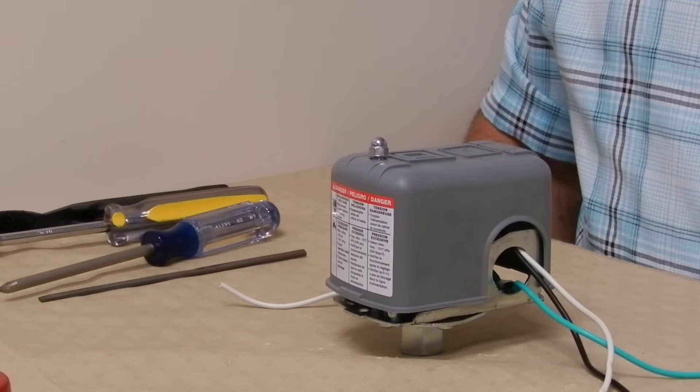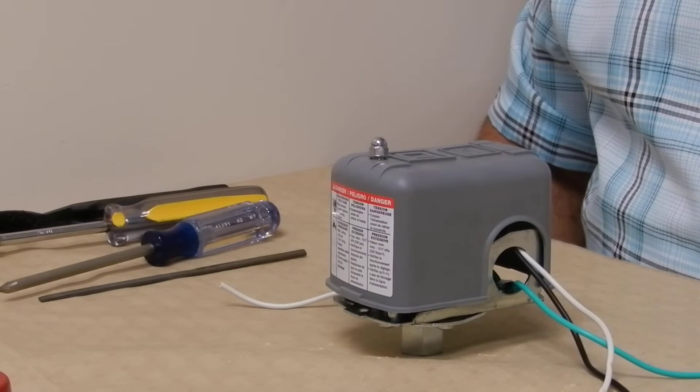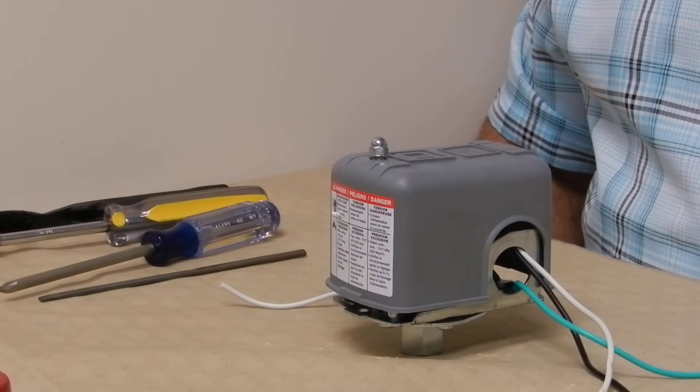You will find that you need to service your pressure switch. First thing to do is go to your circuit breaker panel, locate the breaker that turns off your well, and turn it off.